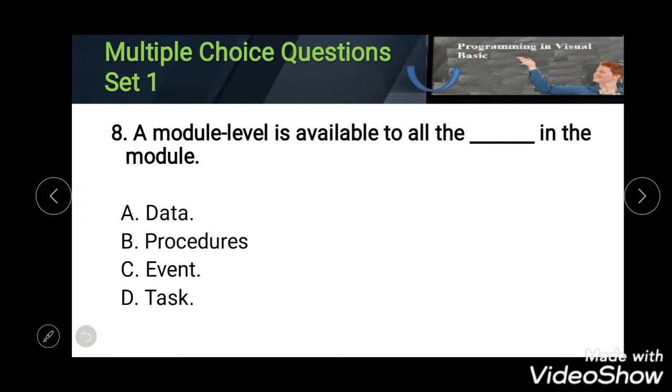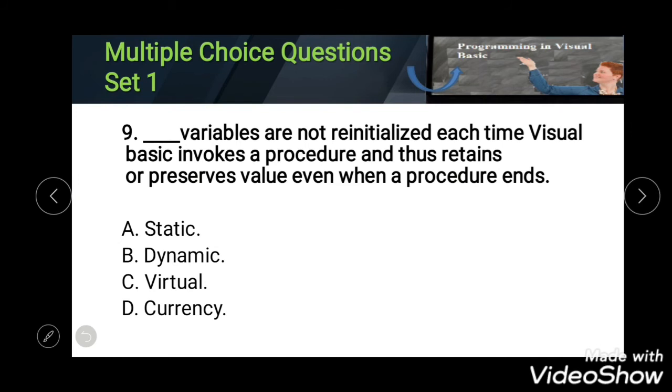Eighth: a module level is available to all the blank in the modules. Options: Data, Procedures, Event, and Task. The correct one is Procedures.